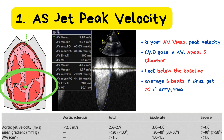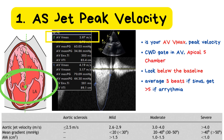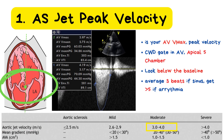Let's apply this to a real case. In my patient's echo results, the AVV max is 3.97 meters per second. Take a look at the grading table on screen for aortic jet velocity — where does 3.97 fall? According to the guidelines, a velocity between 3 and 4 meters per second is classified as moderate aortic stenosis. So this patient would be graded as having moderate aortic stenosis based on peak velocity.